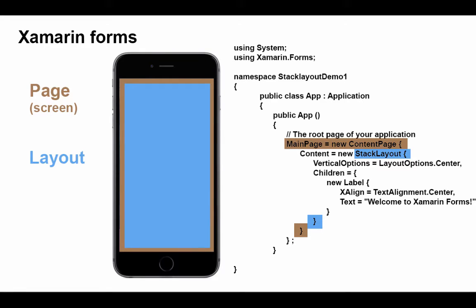Within a page is a layout. This is a container that will contain other objects, and there are also various types of layouts available to us in Xamarin.Forms. Within the layout there are views. You can think of these as our controls that we saw in Windows Forms, and there are a number of views that are common across all platforms we're designing for, including iOS, Android, and Windows.